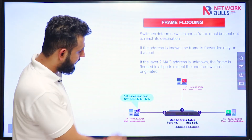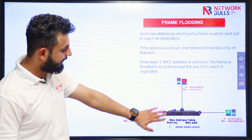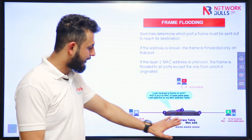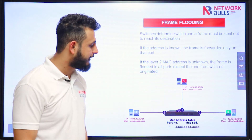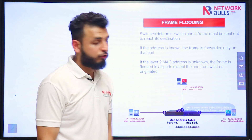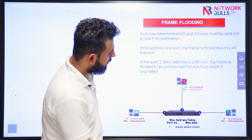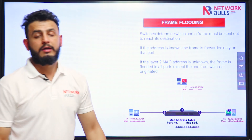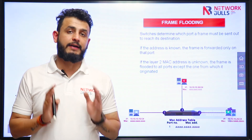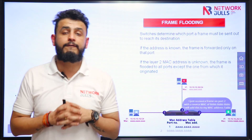Let us say this computer is sending a frame, source MAC is A, destination is B. Switch receives the frame. First thing is switch will add the MAC address in its table — we can see an entry here. But now, destination MAC B is not present in the table. So what switch will do, it will forward it to all the users, to B also and C also. This same concept is called unknown unicast flooding. So this is the concept of frame flooding.